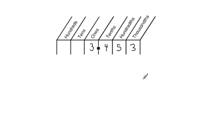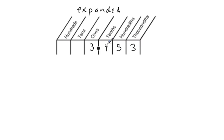And to represent that in expanded form, we're going to say 3 ones plus 4 tenths plus 5 hundredths plus 3 thousandths equals this number. And so let's break it up separately from each other.